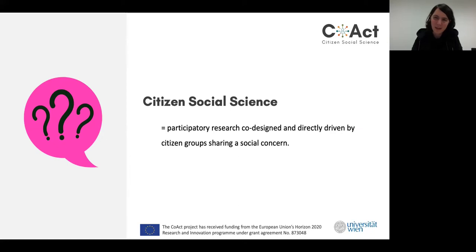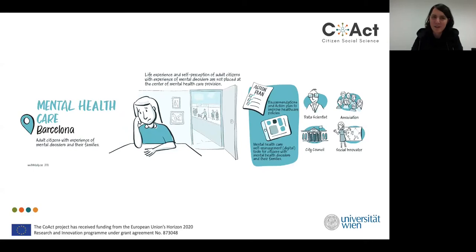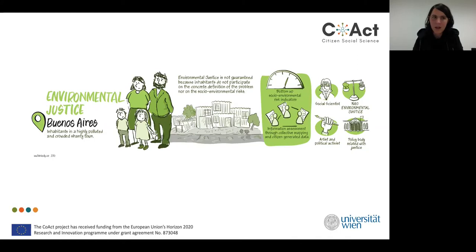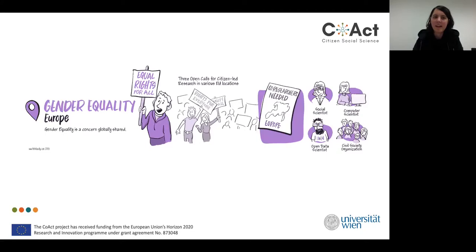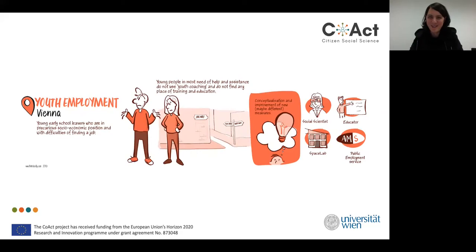To achieve our goals, we are conducting research in four case studies. The Barcelona team tackles mental health. The Buenos Aires team is concerned with environmental justice and including citizens in problem definition around environmental pollution. Gender equality is tackled through open calls for external organizations called Cascading Grants. At the University of Vienna, we are concerned with youth employment, working together with young people within the framework of education and training until 18 — or as we call it in German, Ausbildung bis 18.